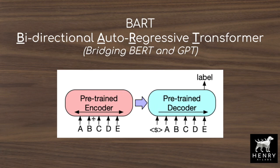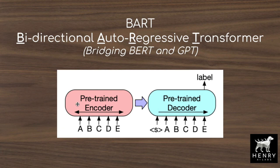BART has an encoder with the same kind of structure as BERT, where you have an input sequence with intermediate corruptions and it's trying to reconstruct the sequence. The decoder gets as input this masked autoregressive context and predicts the next token autoregressively, while also attending on the hidden representations in the BERT encoder half of the model. This architecture — bidirectional context on the encoder side and autoregressive decoder — is why BART is the strong baseline right now for doing summarization tasks.